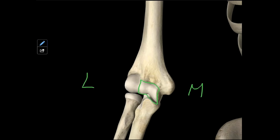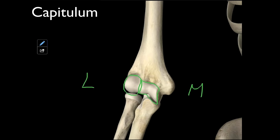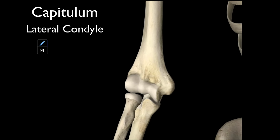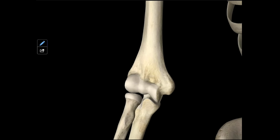Just lateral to the trochlea, we have another structure called the capitulum — that's also called the lateral condyle. Capitulum comes from a Latin word that means a little head, and it kind of looks like this little round head right here on the lateral aspect of that distal humerus. So first we have our capitulum, which is lateral, and medially we have our trochlea.